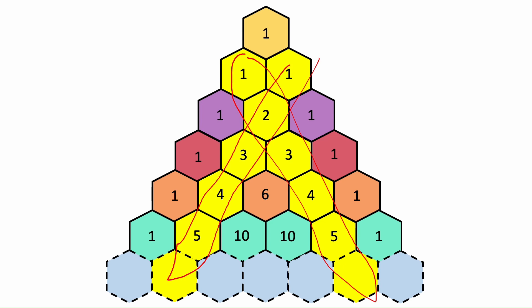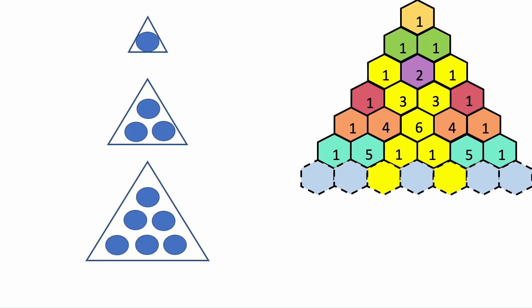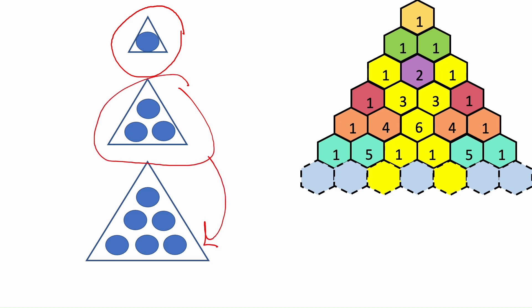By following the construction pattern of the triangle, it is easy to see why this happens. The third diagonal is where it gets really interesting — we have the numbers one, three, six, ten, fifteen, twenty-one, and so on. These are known as the triangular numbers, so called because these counts of objects can be arranged into an equilateral triangle. The triangular numbers are formed by each time adding one more than was added the previous time: we have one, add two to get three, add three to get six, add four to get ten, and so on.